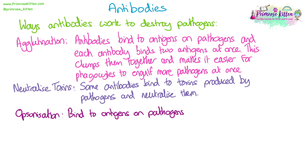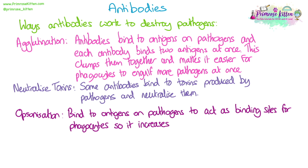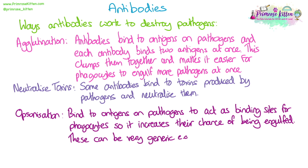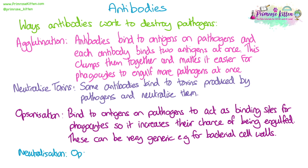Opsonization is where antibodies bind to antigens on pathogens and then act as binding sites for phagocytes, attracting phagocytes and increasing the pathogen's chance of being engulfed and destroyed. These can be quite generic antibodies — binding to proteins or carbohydrates in the bacterial cell wall — so they'll bind to any bacteria. Once bound, the non-variable end of the antibody, which is consistent across antibodies, attracts the phagocytes.